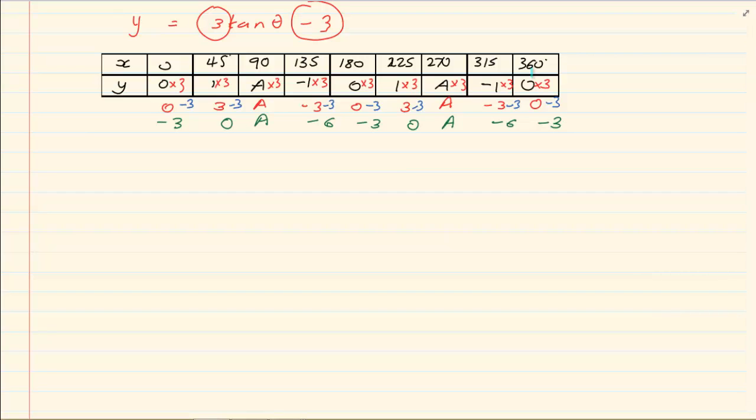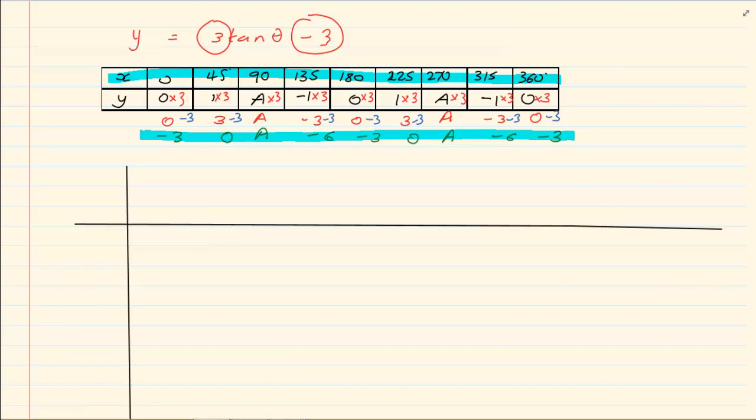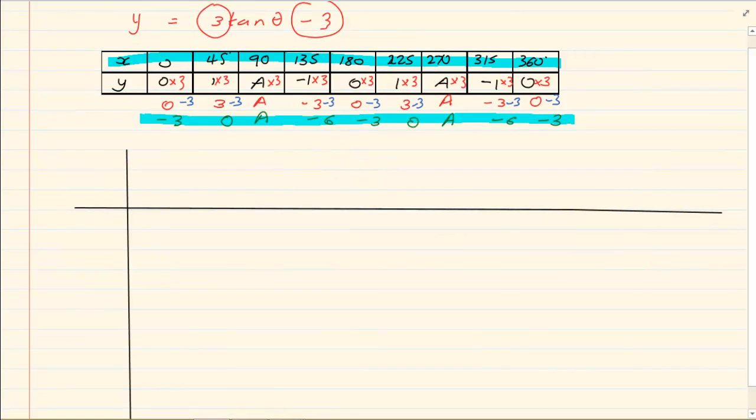So what are we going to plot? We are going to plot the x axis and our new value for y. Now with this here we need to go up to minus 6. So if we got 1, 2, 3, 4, 5, 6, remember it's down so we are negative. And then this way here we still got our 0, 45. So let us plot now. We have 0 and minus 3.